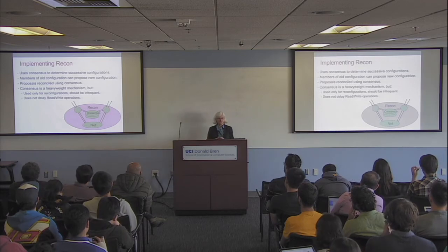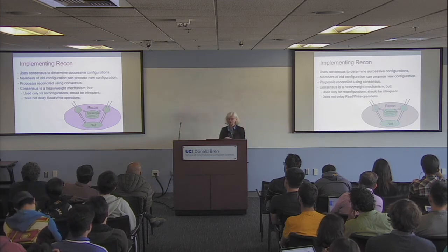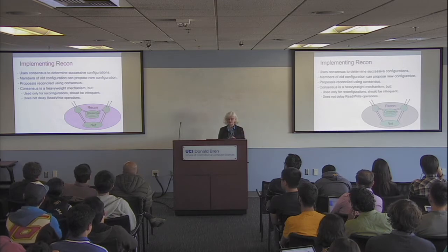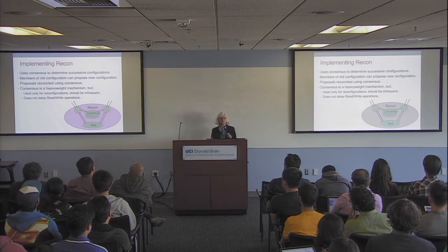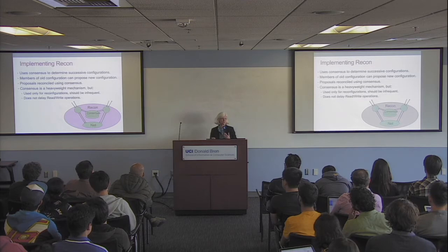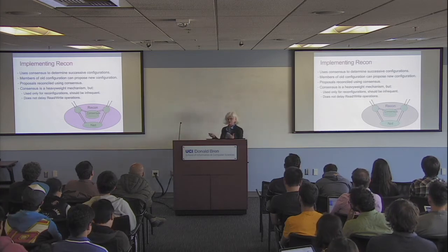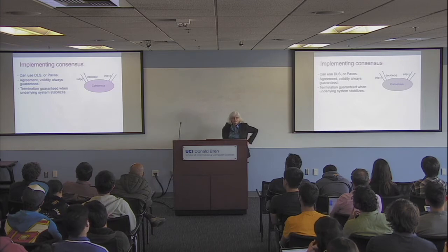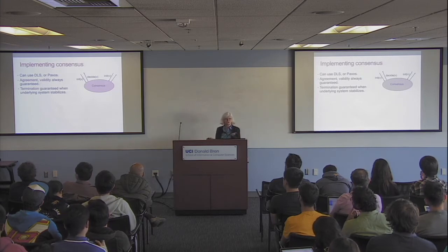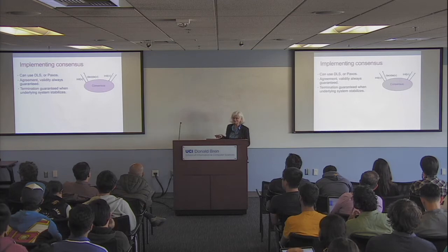Implementing the reconfiguration part is more expensive — you use consensus to determine the successor configuration, a heavyweight mechanism. Consensus is expensive and you might have to wait for the system to stabilize. But we're only using this for reconfigurations, which are supposed to be infrequent operations — this is not delaying the routine read-write operations. We pulled the need for consensus out of the main operations.